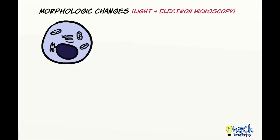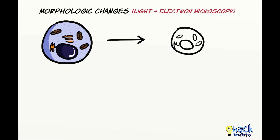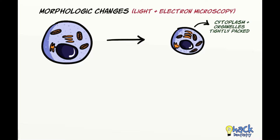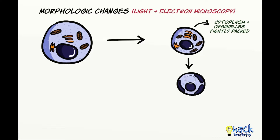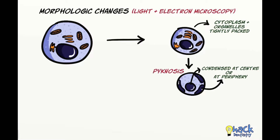During apoptosis, the cell undergoes certain morphologic changes that can be seen in light and electron microscopy. The cell shrinks and becomes smaller in size and the cytoplasm and organelles become tightly packed. The nucleochromatin shrinks and becomes condensed at the center or at the periphery, a process called pycnosis.